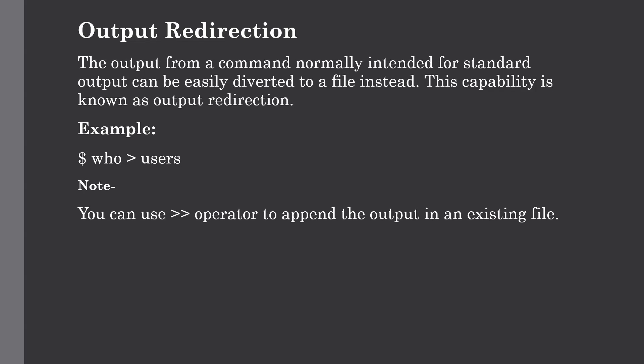The first one is output redirection. The output from a command normally intended for standard output can be easily diverted to a file — this capability is known as output redirection. If we use the greater-than symbol followed by a file name, the output of that command will be written to a file instead of your terminal. Here I have given one example where we store the output of the 'who' command, which gives all information about users, into a file named 'users'.